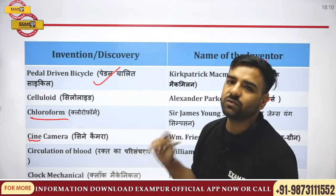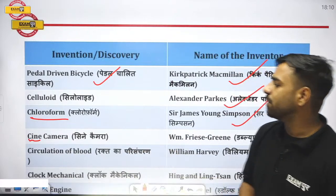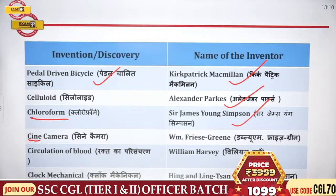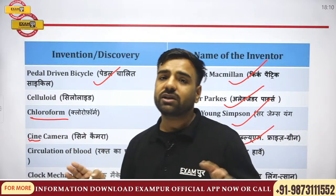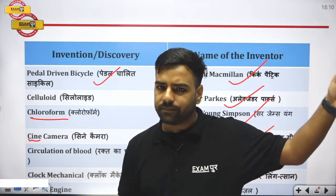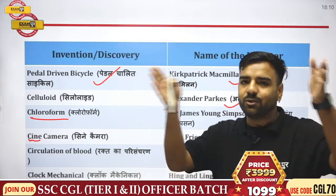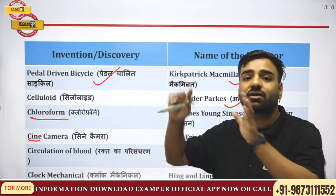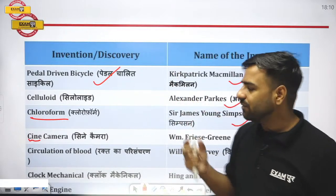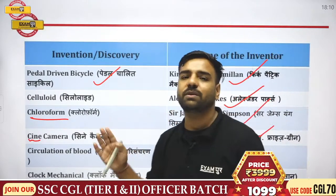Cine camera relates to cinema because of which we are able to see movies. It was discovered by William Friese-Greene. Next, circulation of blood — William Harvey discovered it. The discovery was initially done on animals; he came to know about blood circulation through animal experimentation.